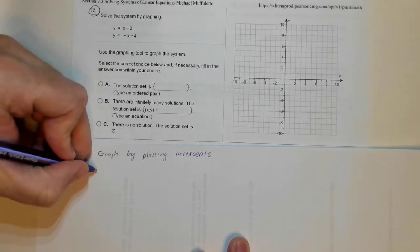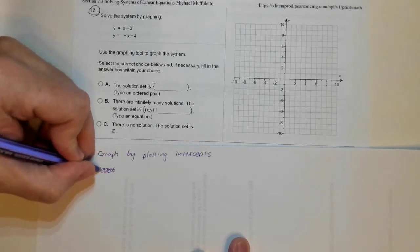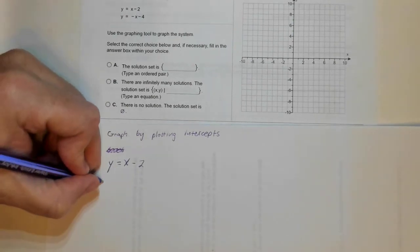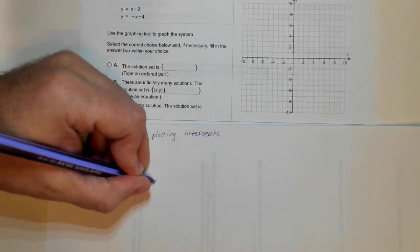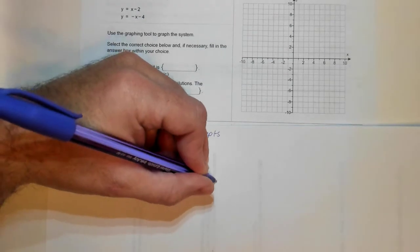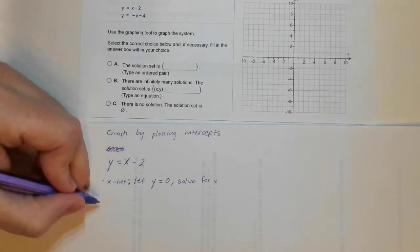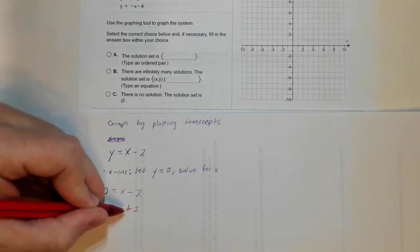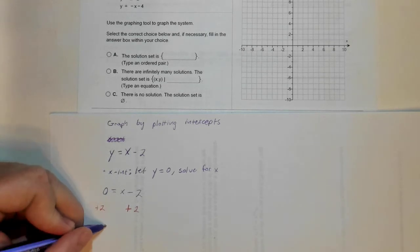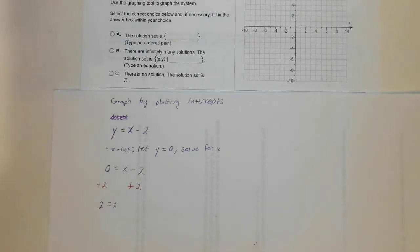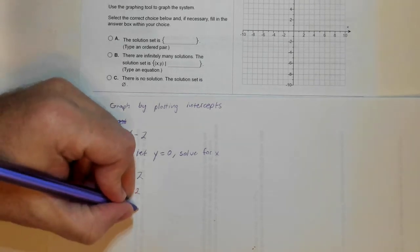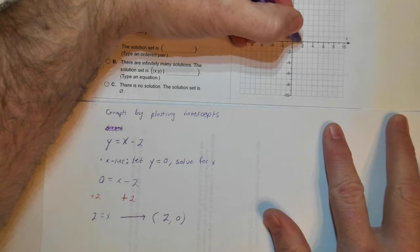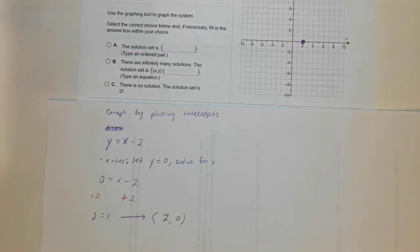I'm going to find the x-intercept. Let's look at Y equals X minus 2. I'm going to plot the x-intercept first. The x-intercept means let Y equals zero, solve for X. So Y equals zero. I get zero equals X minus 2. If I add 2 to both sides, I get X equals 2. That is my x-intercept. By the way, this is the point X comma Y, 2 comma 0. So I go over here, one, two.